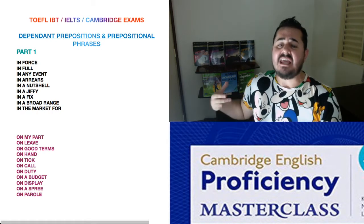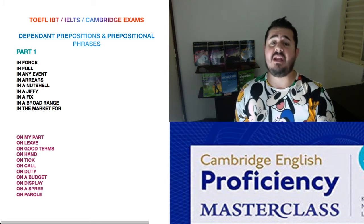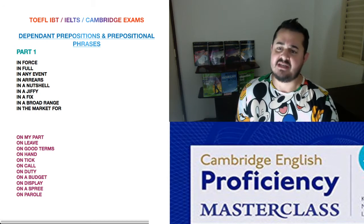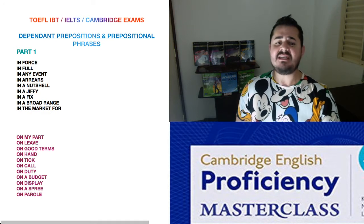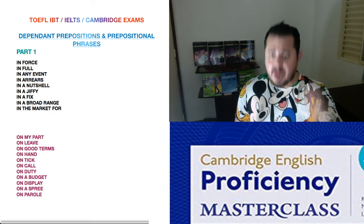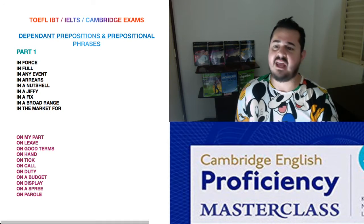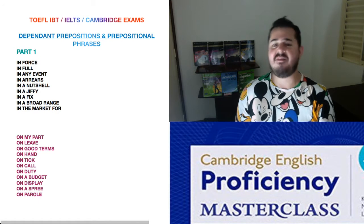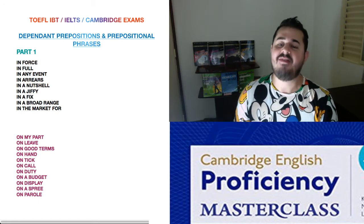The third expression is 'in any event.' It's used when it doesn't matter what happens — the outcome will be positive. For example, I really want to watch Beethoven's Fifth Symphony tonight at the theater, but it's raining. But I'm going to be there in any event. It could be raining cats and dogs, but I will be there.